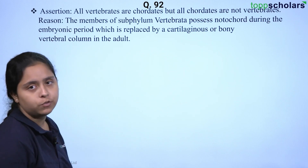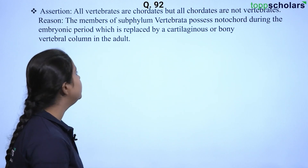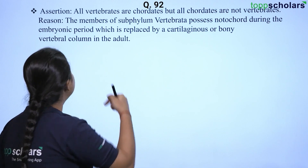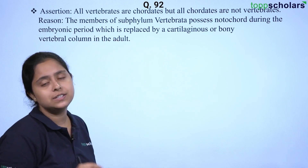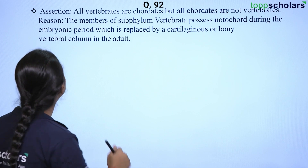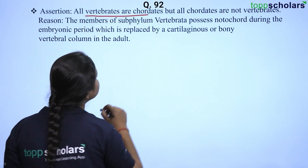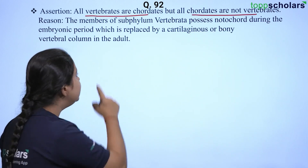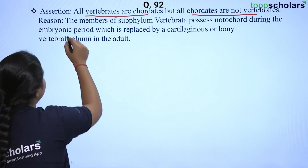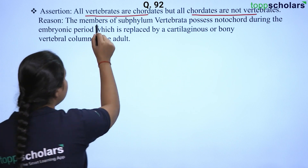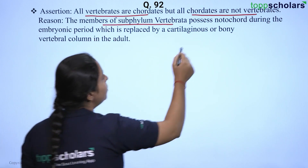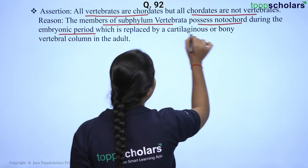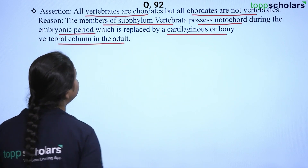Next is an assertion and reason type of question. We need to find out whether the statements are true or false, and also whether the reason correctly justifies the assertion. The assertion statement is: all vertebrates are chordates but all chordates are not vertebrates. The reason statement is: the members of subphylum Vertebrata possess notochord during the embryonic period, which is then replaced by a cartilaginous or bony vertebral column in the adult.